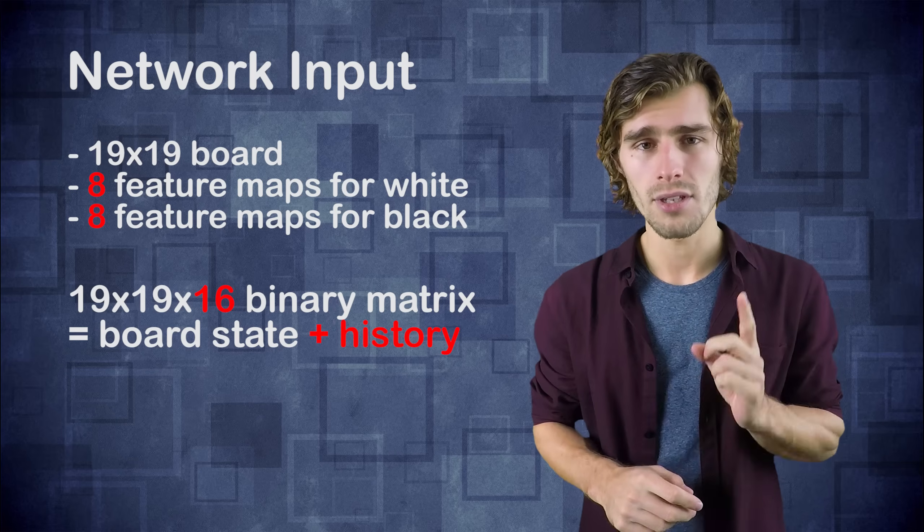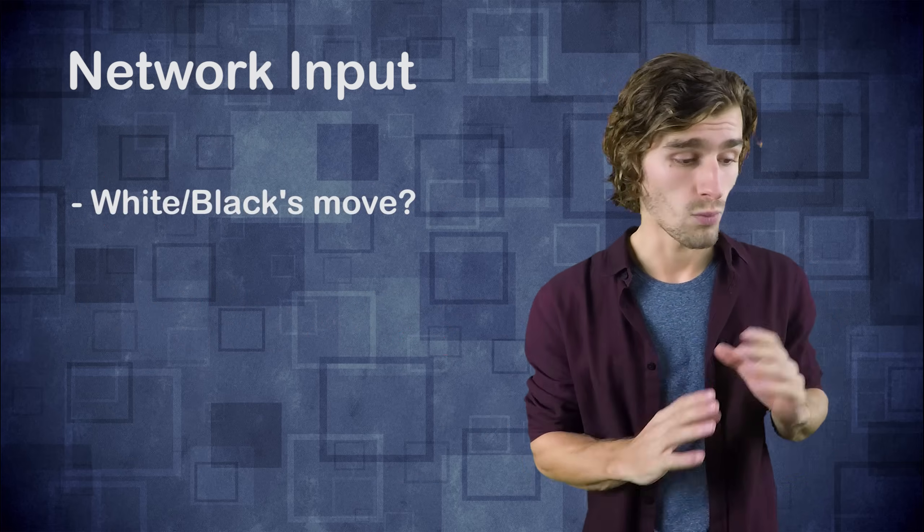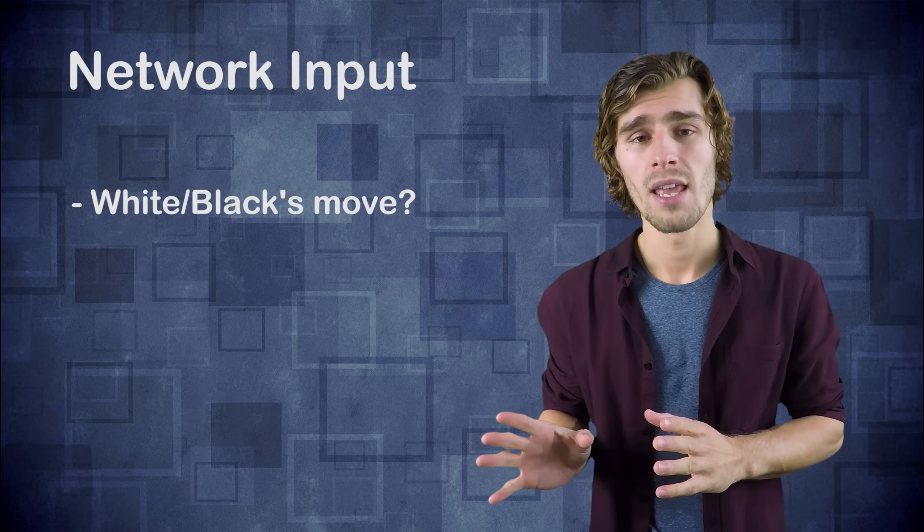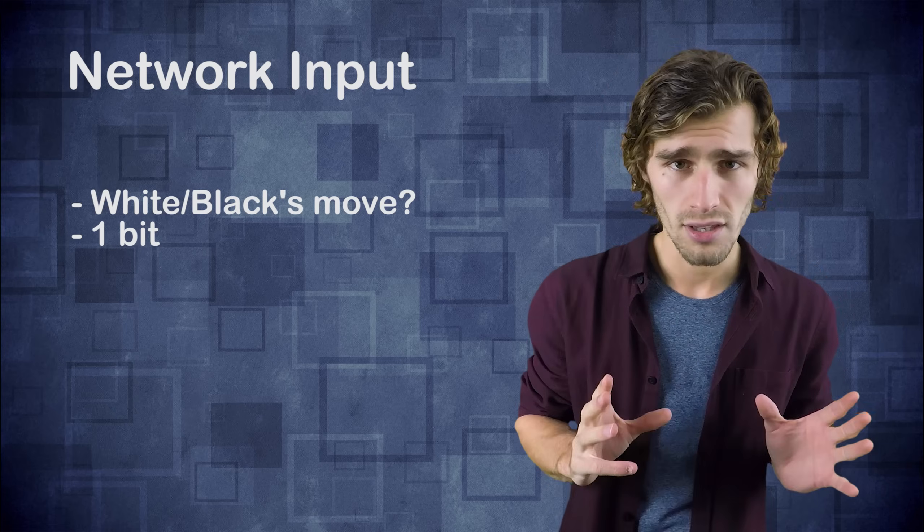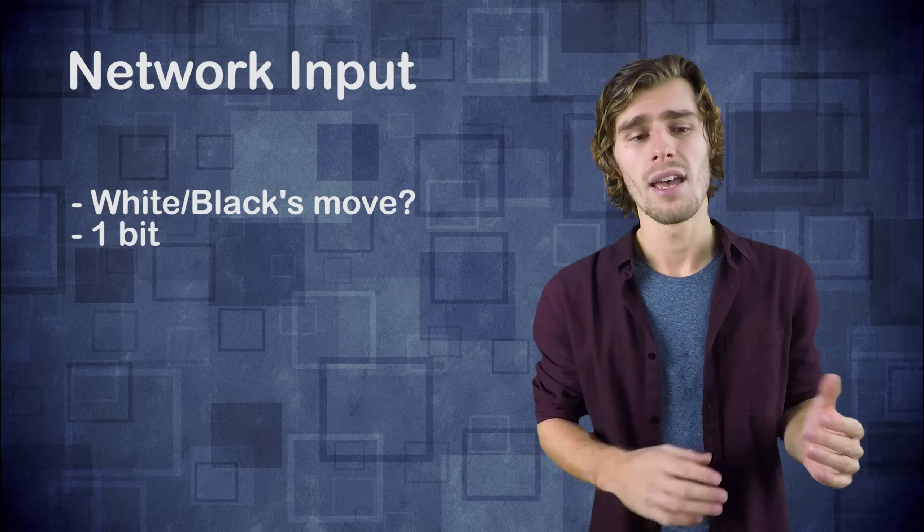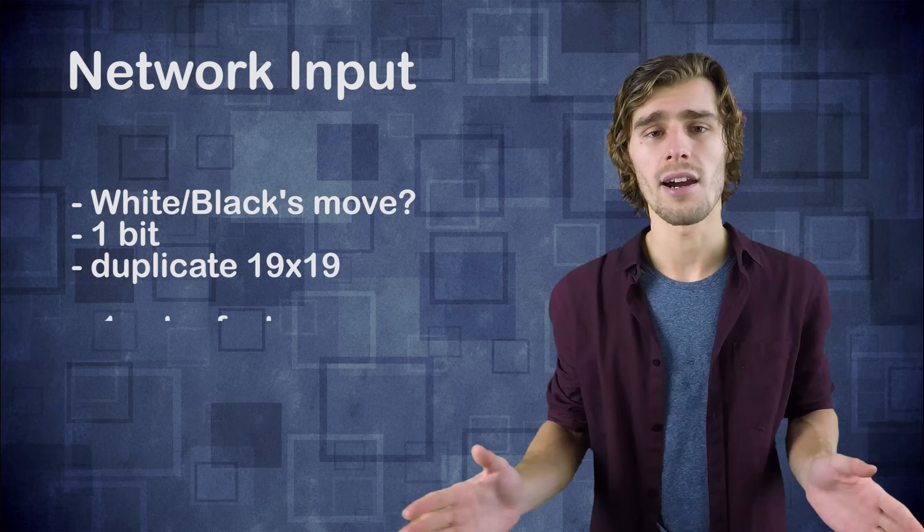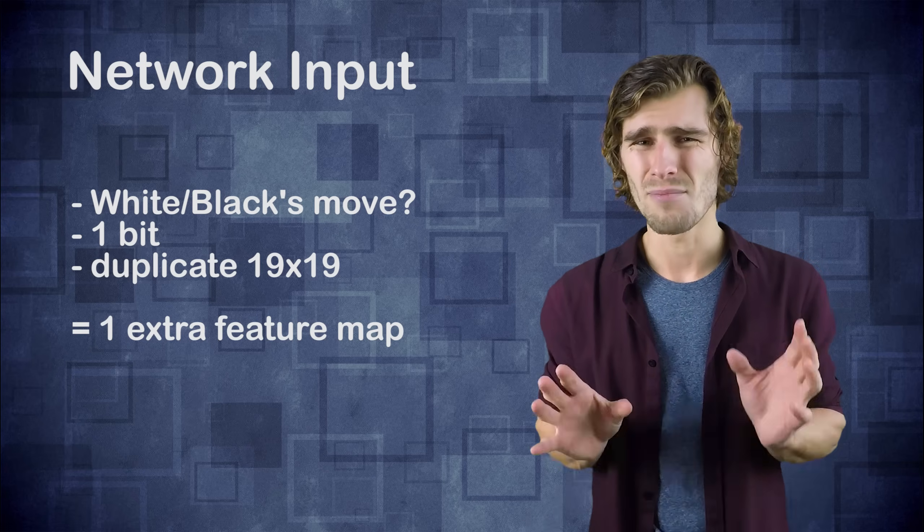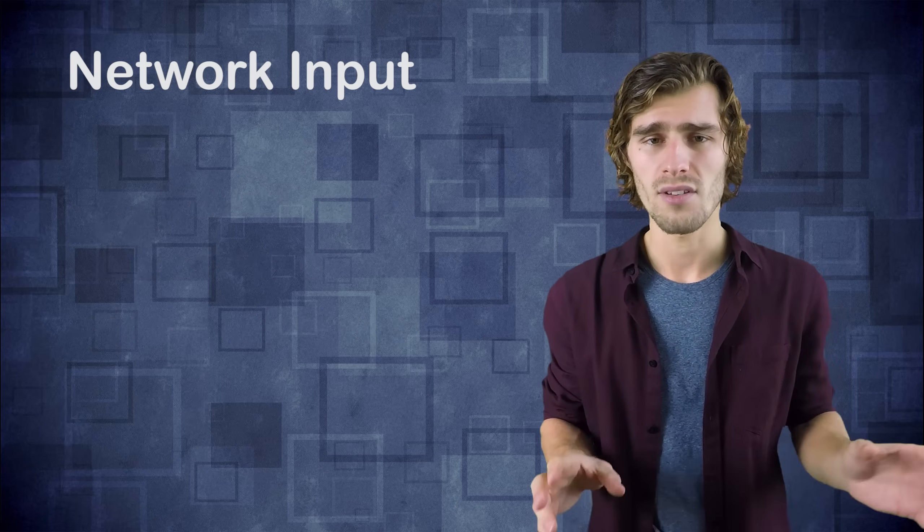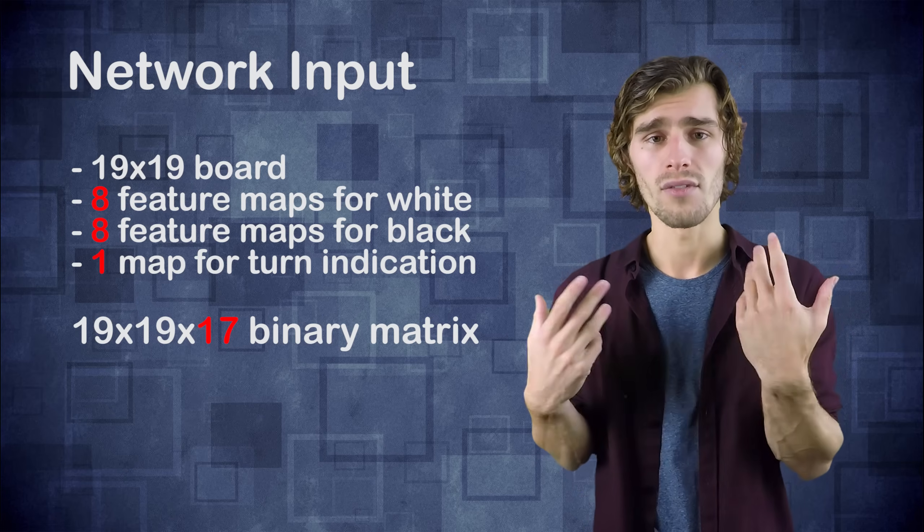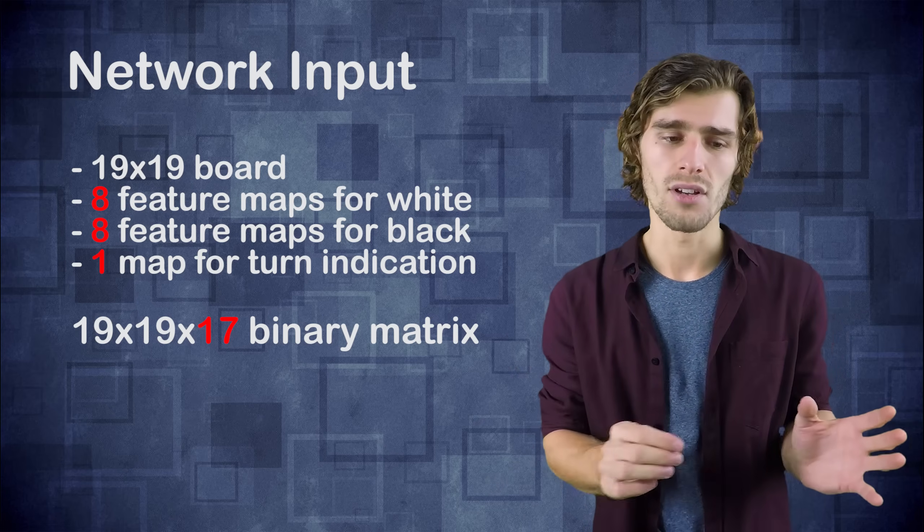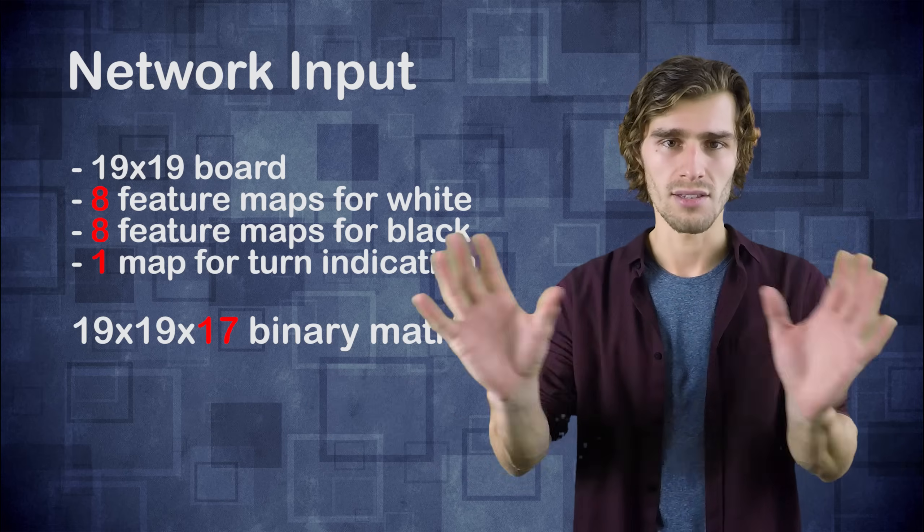So we end up with this 19x19x16 board representation. Eight feature maps for the white stones and eight feature maps for the black stones, all of which are binary numbers, either 1 or 0. And then in order to play the game you need one final thing. You need to know whose move it is. Is it white's move or is it black's move? And so for this, in theory, you only need a single bit. But the Google DeepMind team, they actually decided to duplicate this bit and to actually duplicate it over the entire 19x19 grid. The reason for this is mainly an implementation detail because if you want to feed this whole representation 19x19x17 to a convolutional network, it's easier if you can just duplicate that last bit over the entire feature frame.